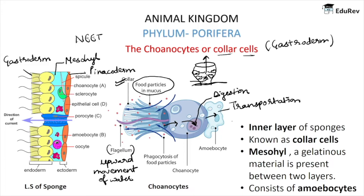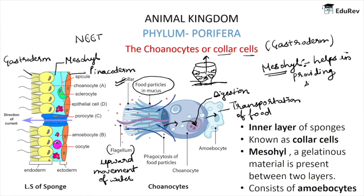Behind the gastrodermal layer is present the mesohyle, which helps in providing structure to sponges. Another important function of amoebocytes, present just behind the coanocytes, is that they also help in the regeneration process in case of asexual reproduction.